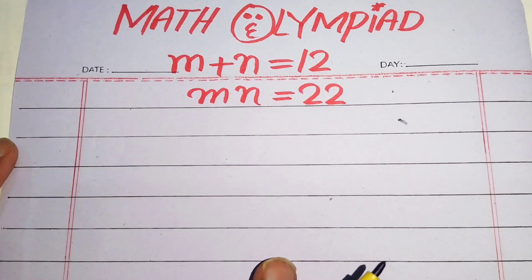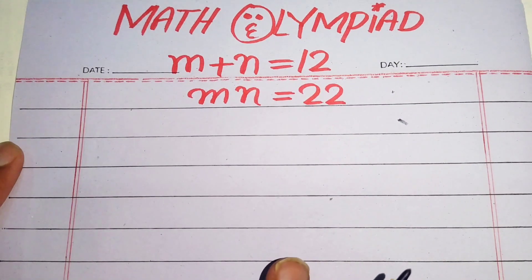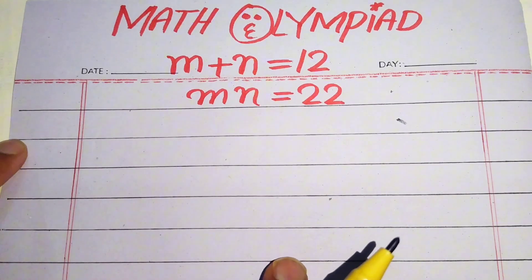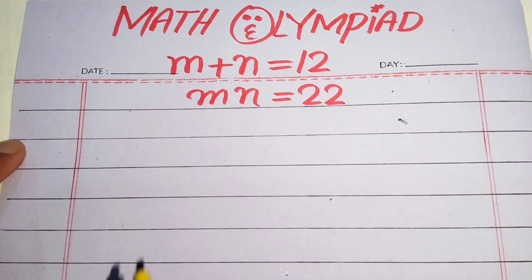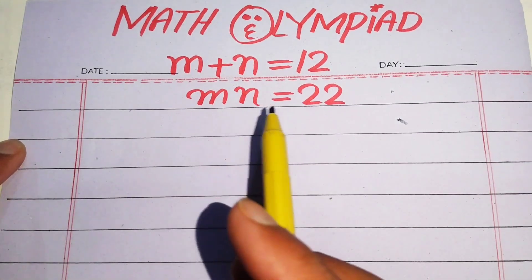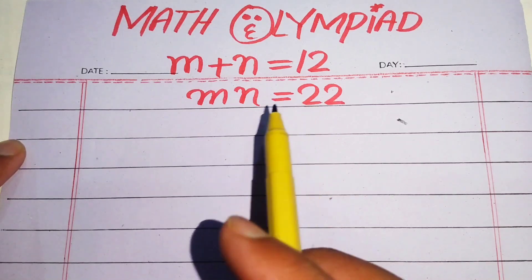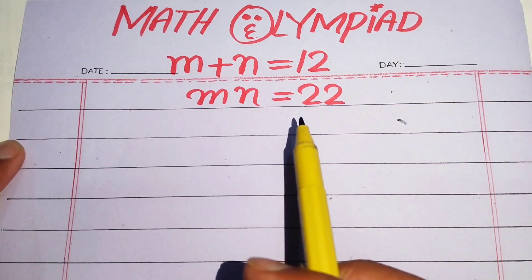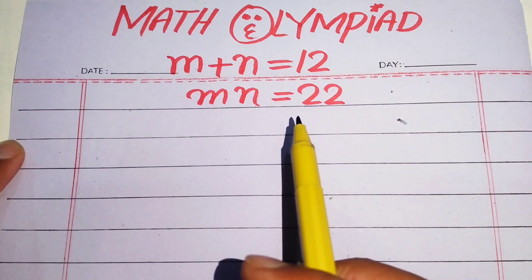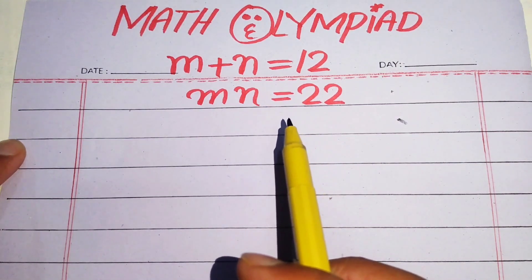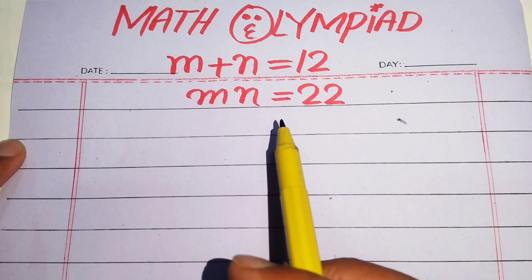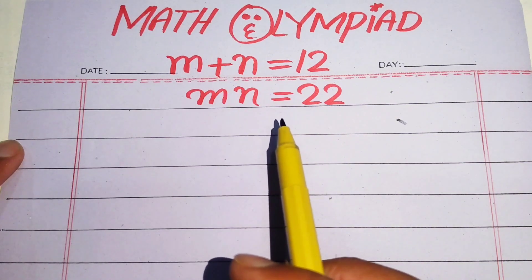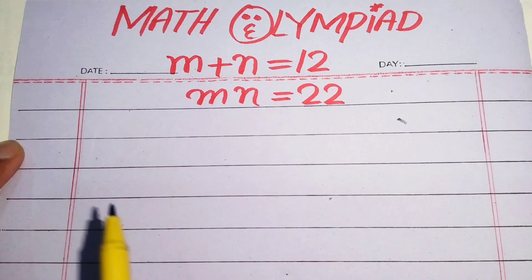Hello everyone, welcome. We solve this math Olympiad algebra problem where m plus n equals 12 and m times n equals 22. We will solve for the values of m and n.